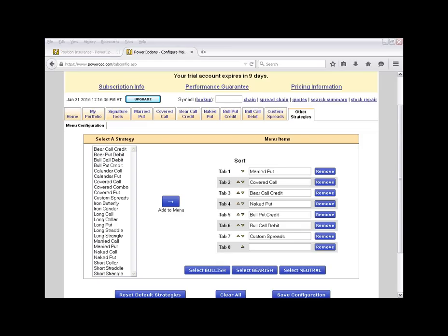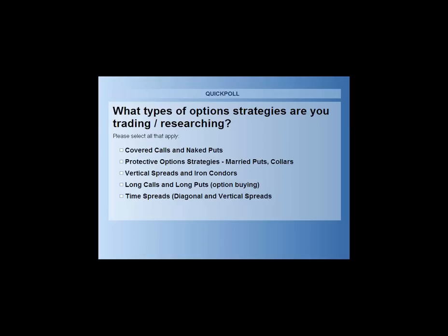Before we go further, I want to launch one quick poll to help gear the remainder of the presentation. What types of option strategies are you mainly trading? Are you mainly looking at covered calls and naked puts? Are you looking at protective option strategies — married puts, radioactive trades, and collar positions? Are you looking at vertical spreads, bear call credits, bull put credits, iron condors, and debit spreads? Are you mainly interested in call buying or put buying? Or are you focusing on time spreads — diagonal and horizontal or calendar spreads?